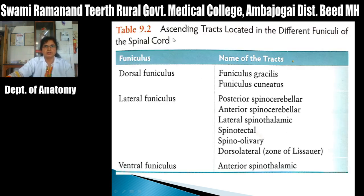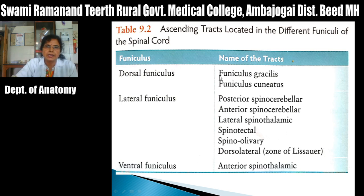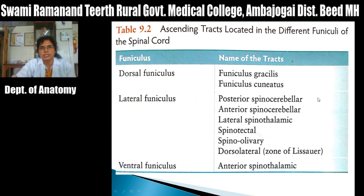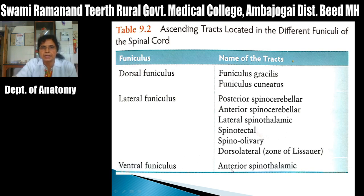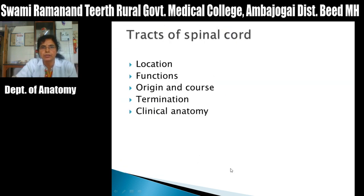A summary table shows ascending tracts located in different funiculi of the spinal cord. The dorsal funiculus mainly consists of fasciculus gracilis and fasciculus cuneatus. The lateral funiculus consists of posterior spinocerebellar, anterior spinocerebellar, lateral spinothalamic, spinotectal, spinoolivary, and dorsolateral tracts. The ventral funiculus mainly consists of the anterior spinothalamic tract.